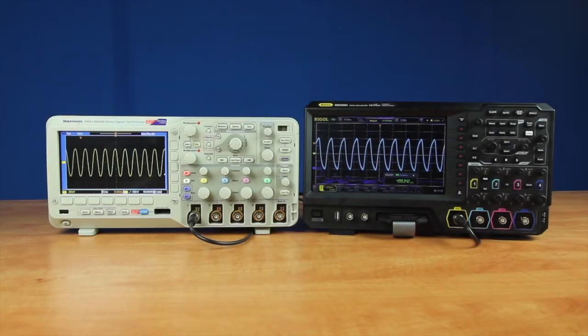Let's compare the waveform capture rate between the Rigol MSO-5000 series and the Tektronix MSO-2000B series oscilloscopes. Both instruments were recently calibrated and the Tektronix is running firmware version 1.56.